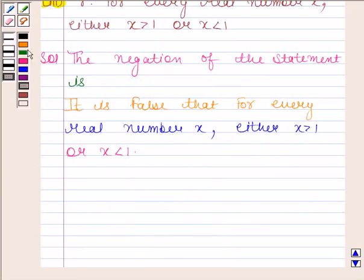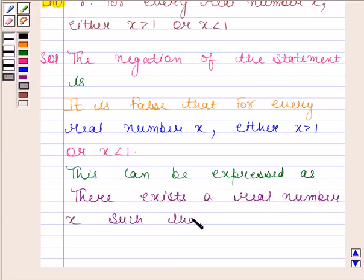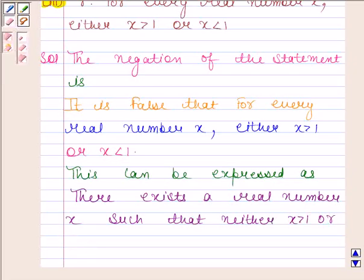So, this can also be expressed as, there exists a real number x such that neither x is greater than 1 nor x is less than 1.